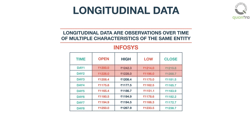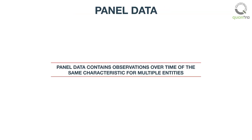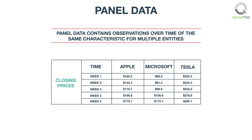For example, OHLC are the multiple characteristics, Infosys is the entity, and a time period of one week is the time series in this example. Panel data contains observations over time of the same characteristic, but for multiple entities. For example, closing prices of Apple, Microsoft, and Tesla over a period of one year.